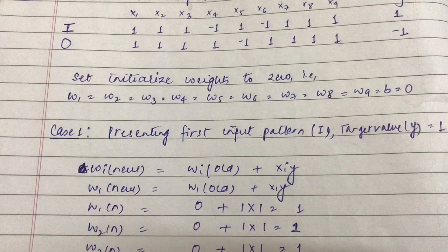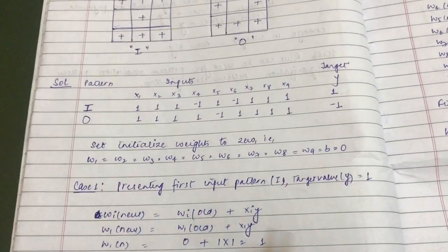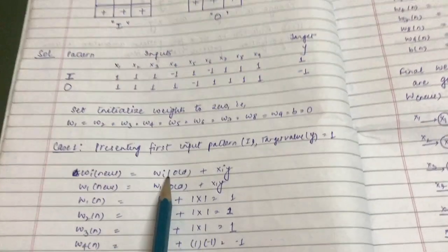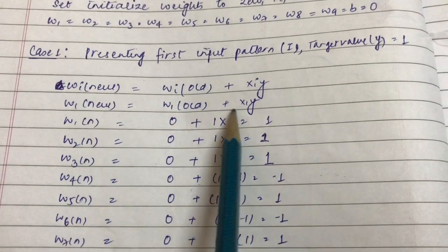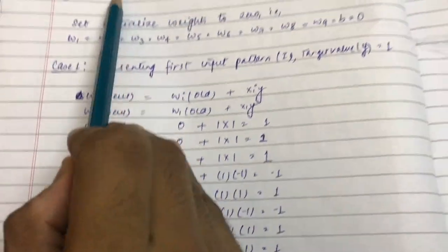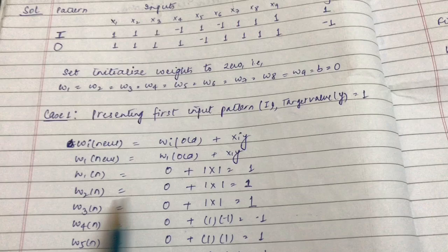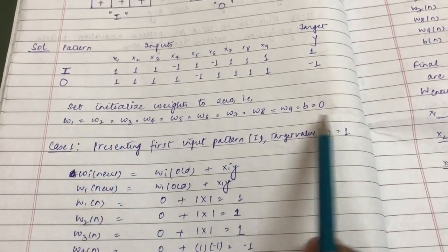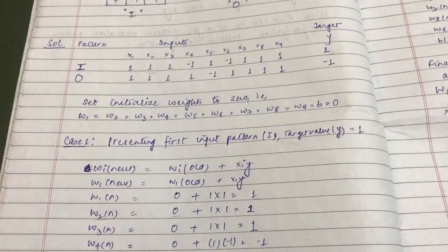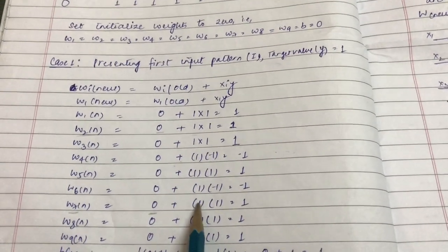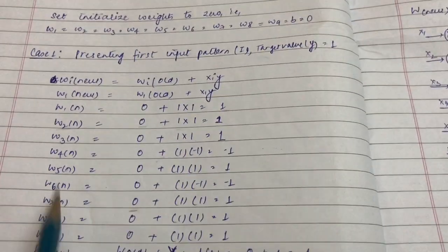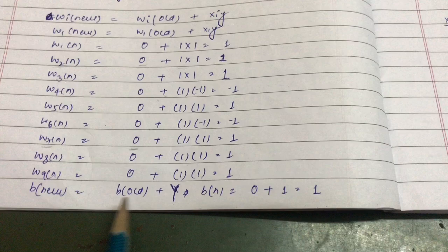Presenting the first input pattern I, we update the weights using wi_new = wi_old + xi * y. So w1_new = w1_old + x1 * y. Since w1_old is 0, x1 is 1, and y is 1, w1_new becomes 1. Similarly, w2_new = w2_old (0) + x2 (1) * y (1) = 1. For w7_new = w7_old (0) + x7 (1) * y (1) = 1. All weights w1 through w9 are updated accordingly.